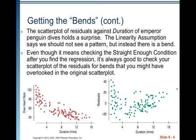The scatter plot of residuals against duration of emperor penguin dives holds a surprise — remember the problem in your book? You've got the dive part rate and then the duration of the dive. The linearity assumption says we should not see a pattern, but instead there is a bend. Look closely at the two graphs. The one with the red dots: on the horizontal we've got duration, and on the vertical we've got dive part rate. That is our actual data.